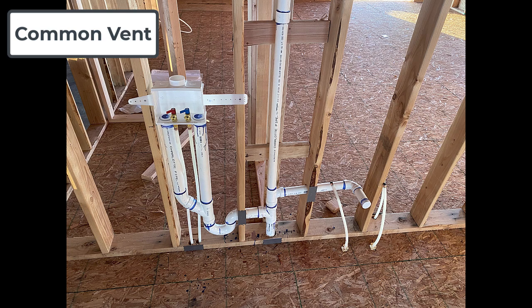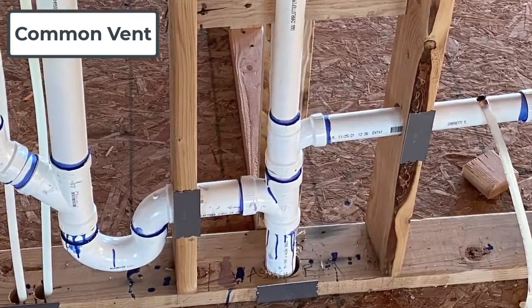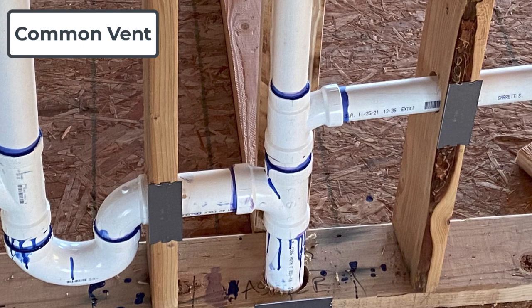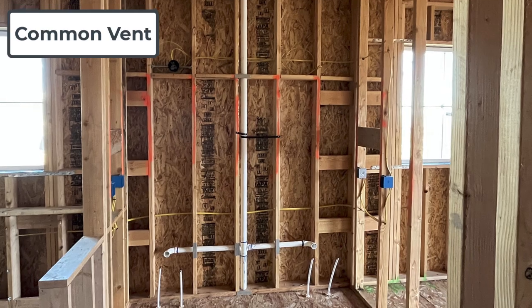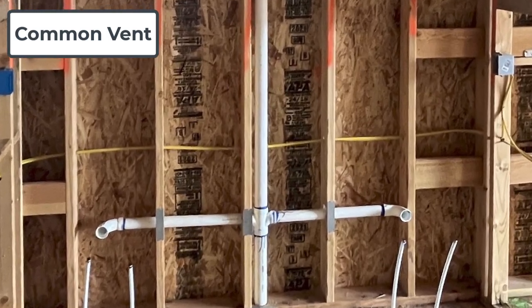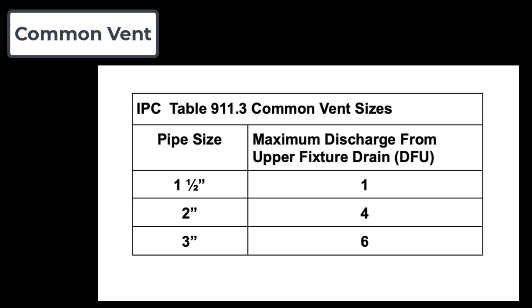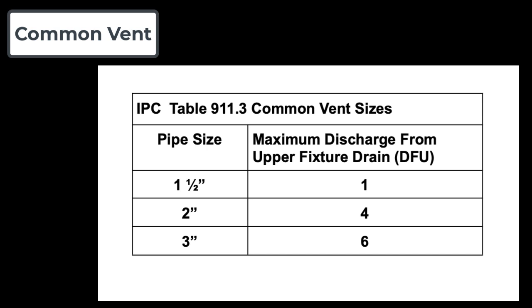A common vent is basically a two-for-one deal where more fixtures are served by one vent. It is useful because it can save cost on labor and material that would be required if each fixture were individually vented. To ensure there is enough air flow, the International Plumbing Code limits the number of drainage fixture units that can be connected to the common vent. This is listed on table 911.3. For example, a two inch drain stack normally allows for six drainage fixture units, but when a two inch pipe is used as a common vent it is limited to four drainage fixture units instead of six.